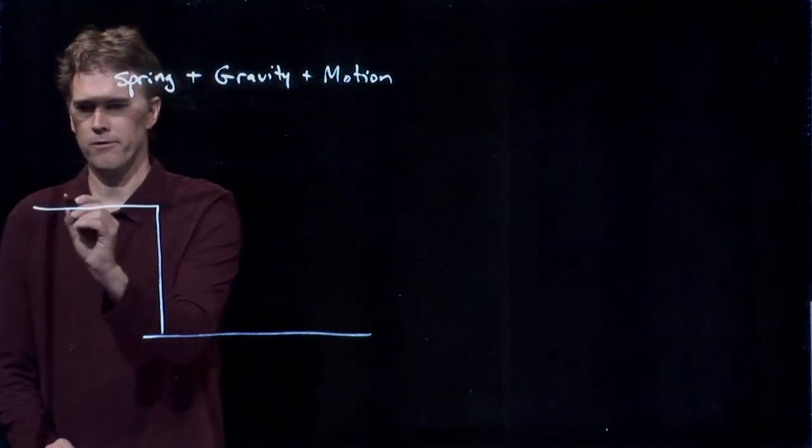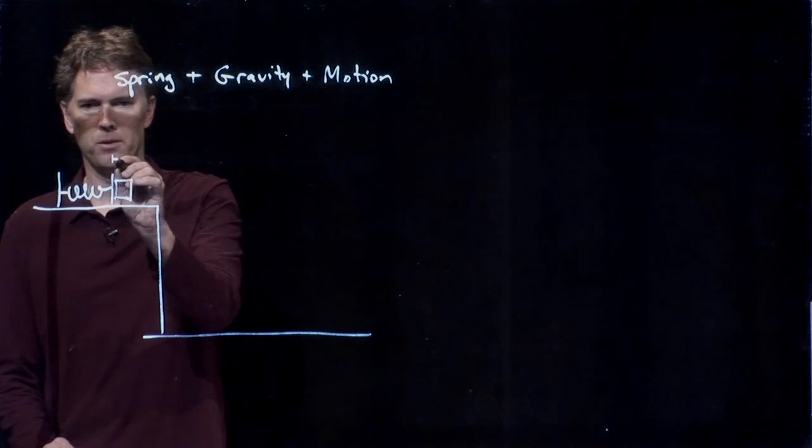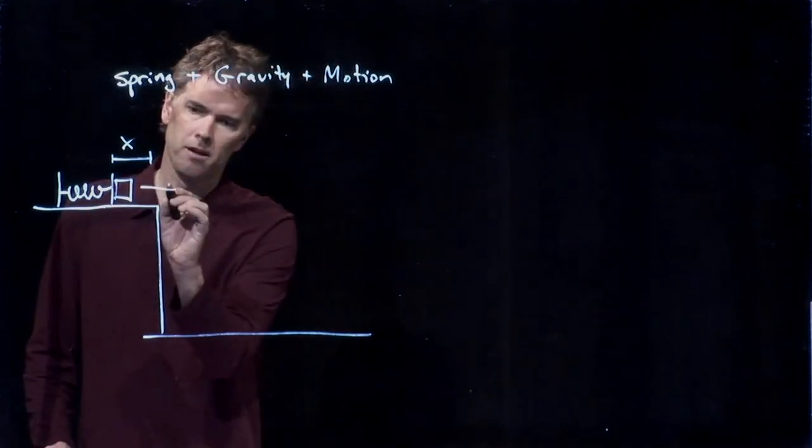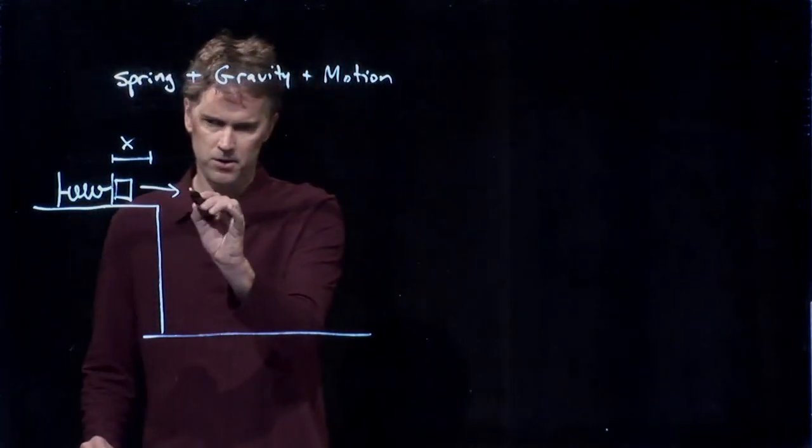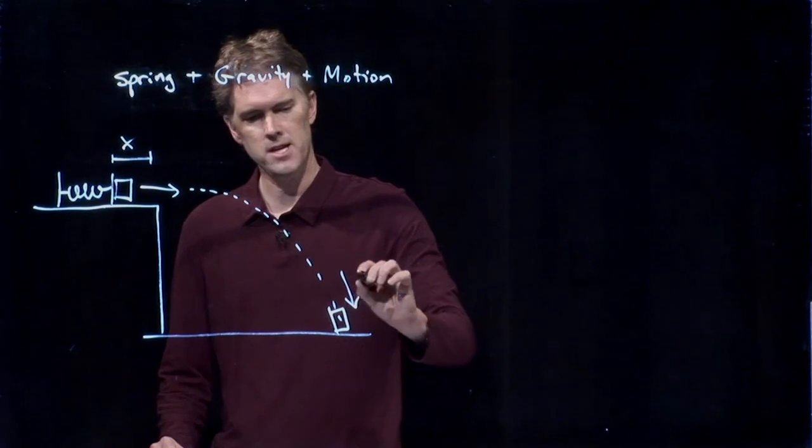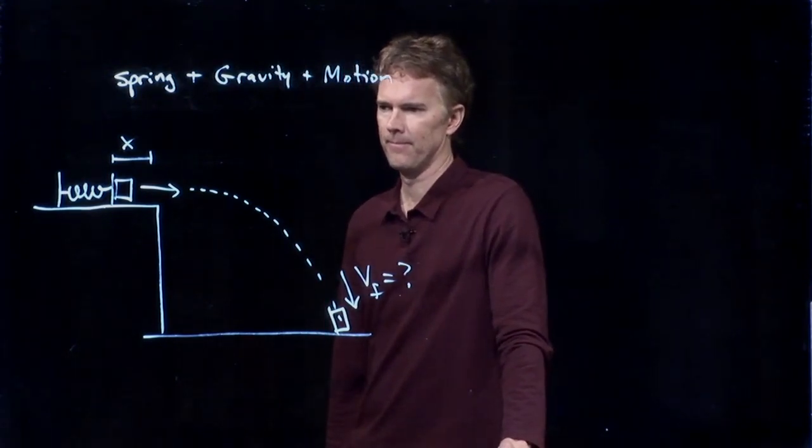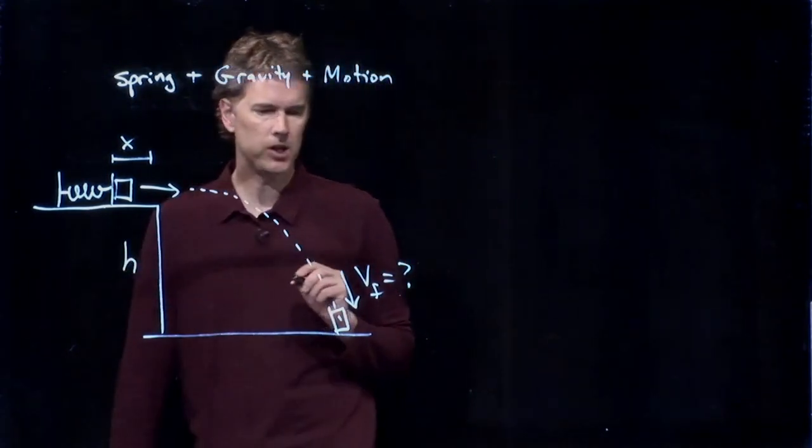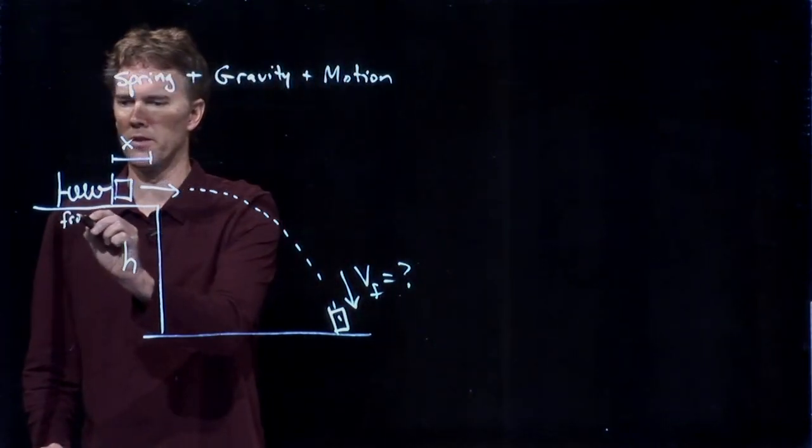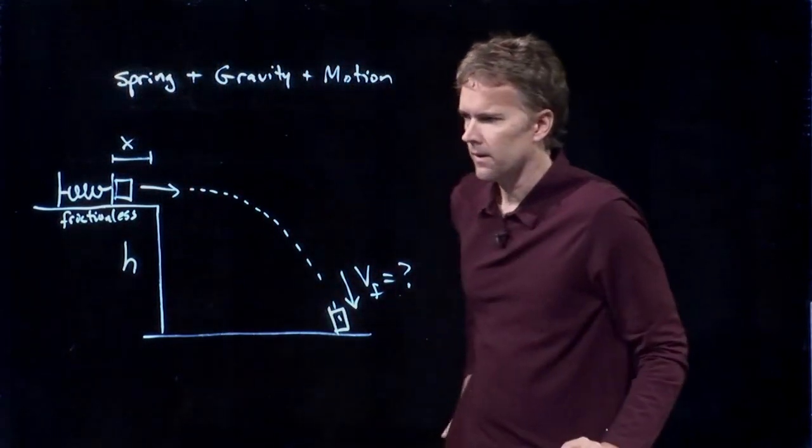We've got a frictionless table that has a spring on it, and that spring is compressed a distance x from its equilibrium. And then we're going to launch this thing off the table, and it's going to go to the ground. And we want to figure out what is VF for that box when it hits the ground. We'll tell you that this is height h, and the box is mass m. And let's say that this is frictionless. There's no friction on the table here.